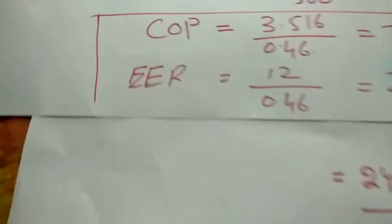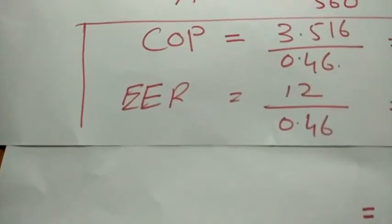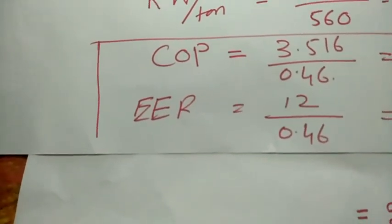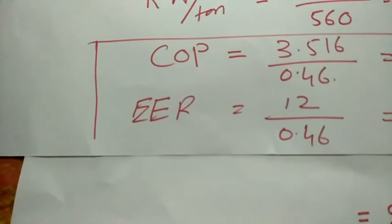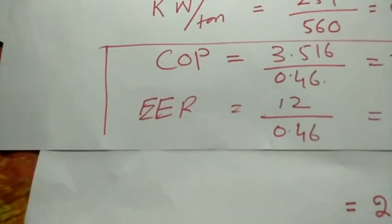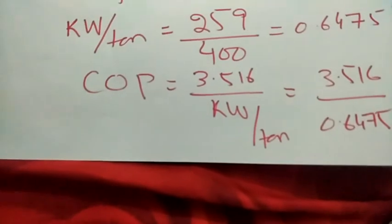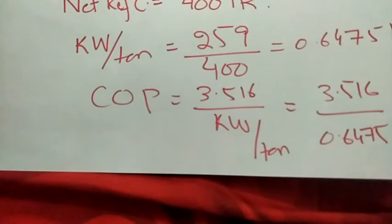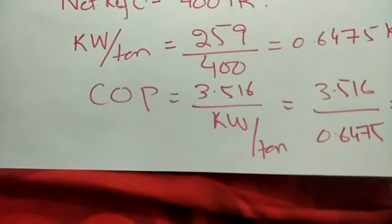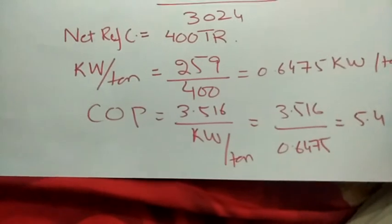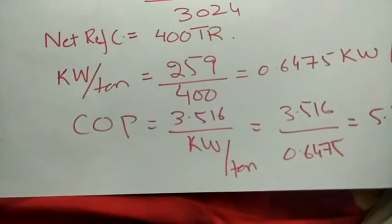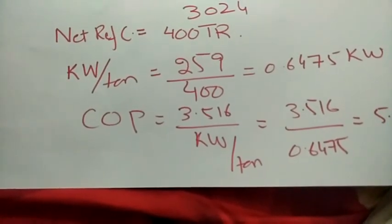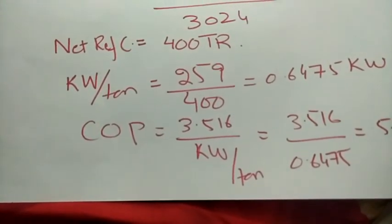Similarly, you can calculate the Energy Efficiency Ratio: EER = 12 ÷ kilowatt per ton. You can calculate EER by yourself using the kilowatt per ton value we found. That's all for today's video. If you liked this video, please subscribe to our channel and give your feedback. Thank you so much.